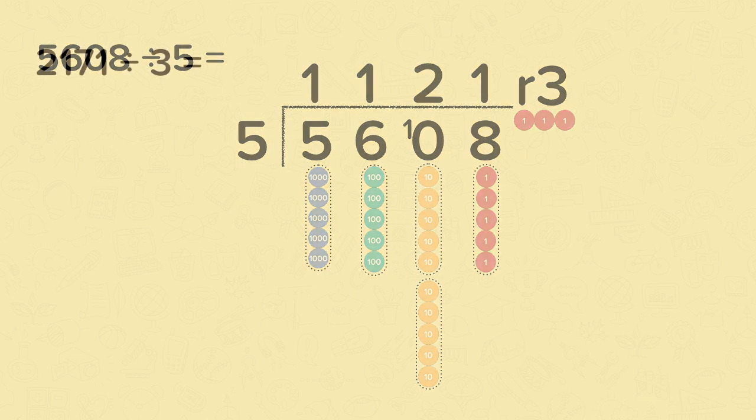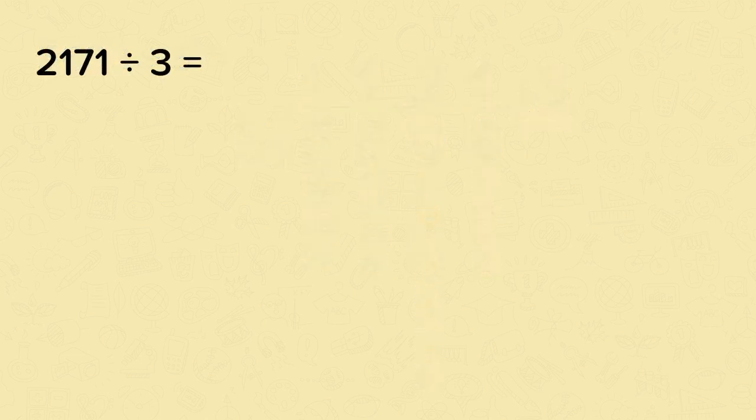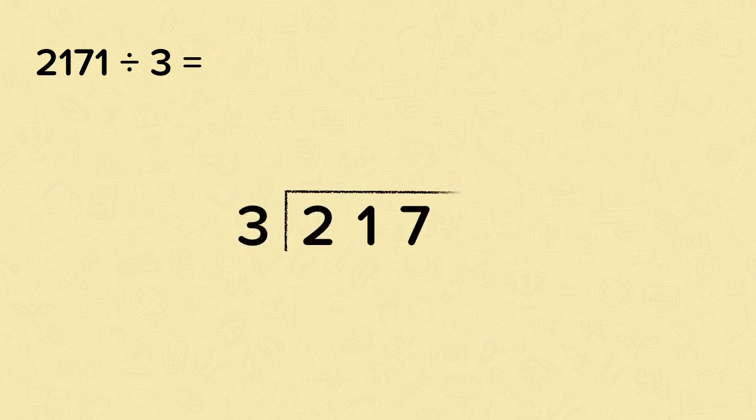Now let's have a look at another example. This time two thousand one hundred and seventy-one divided by three. So we'll set it out like this. Let's start with the thousands. We can't divide two by three, so we move the two over into the hundreds place. Now we can do twenty-one divided by three, that's seven.